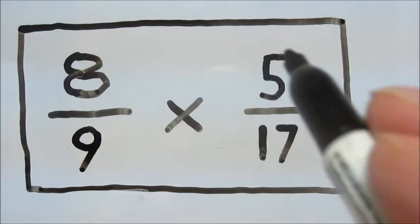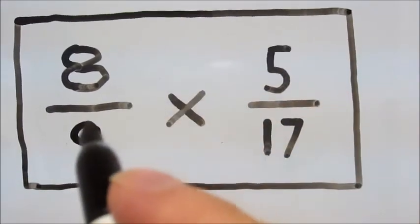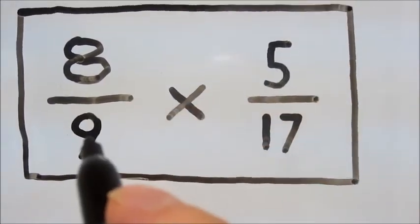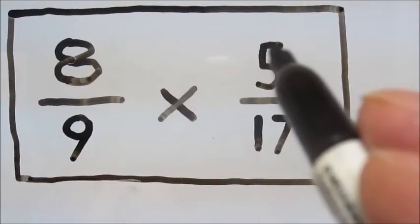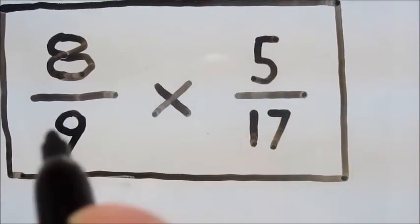When we look at our other numerator 5 and our denominator of 9, 5 does not go into 9 evenly and there are no common factors between 5 and 9.